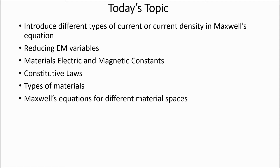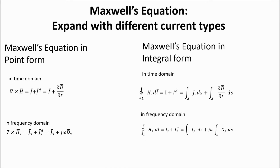Finally, Maxwell's equation will be tailored for a material with specific characteristics. The current type affects the Maxwell equation derived from Ampere's law with displacement current, which states that the circulation of magnetic field equals current plus displacement current. The point form states that the curl of H equals current density plus displacement current density, where the displacement current density is partial D over partial t.